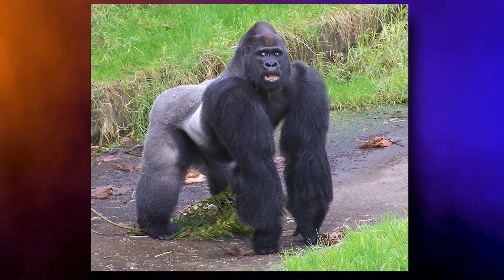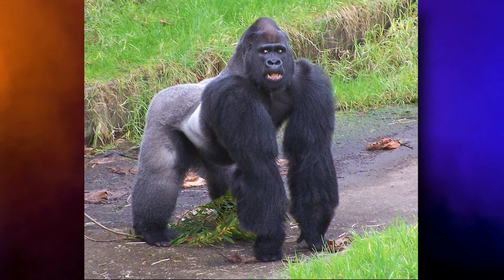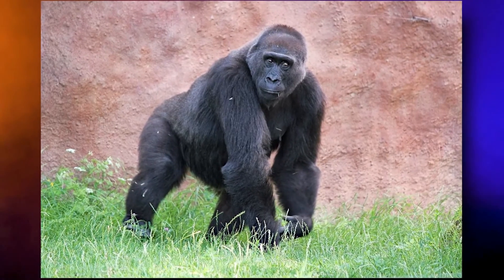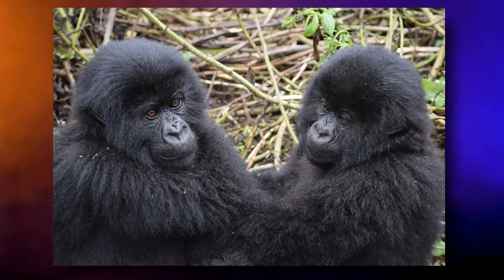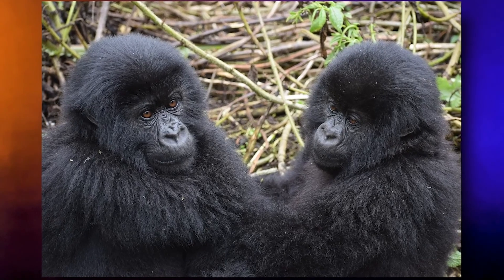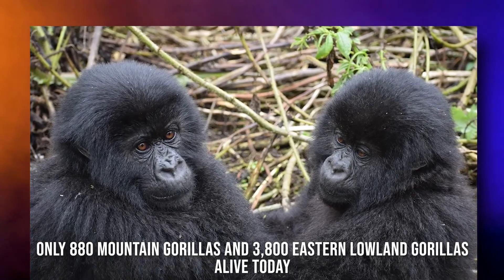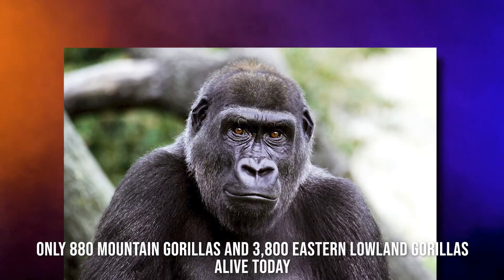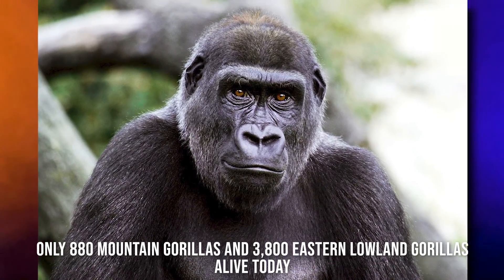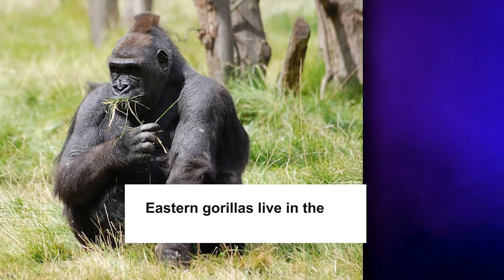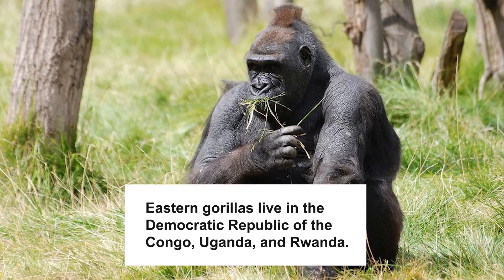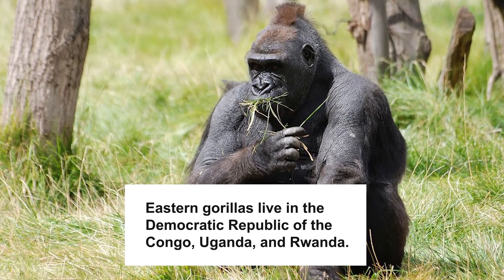Eastern gorillas include the eastern lowland gorilla and the mountain gorilla. This species is also classified as critically endangered, with only 880 mountain gorillas and 3,800 eastern lowland gorillas alive today. Eastern gorillas live in the Democratic Republic of the Congo, Uganda, and Rwanda.